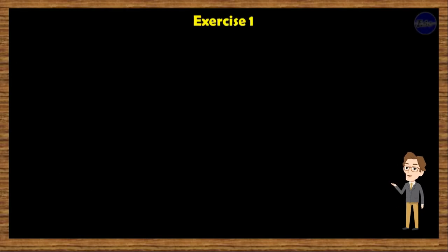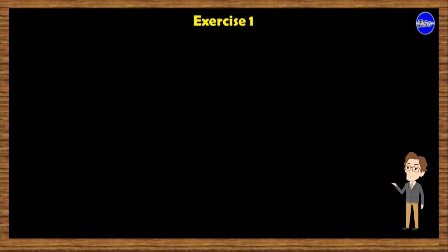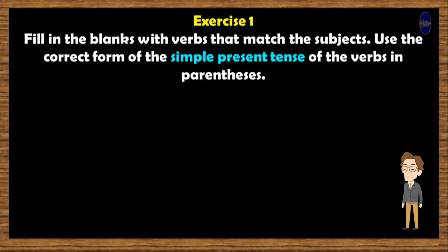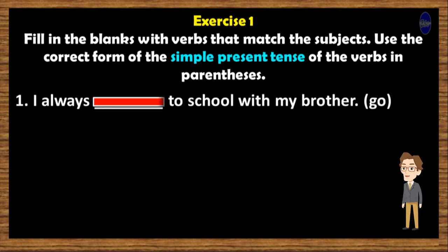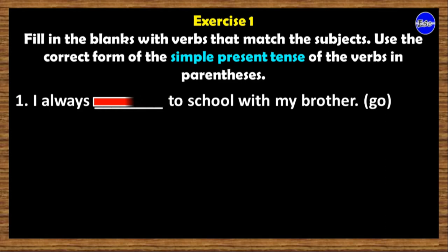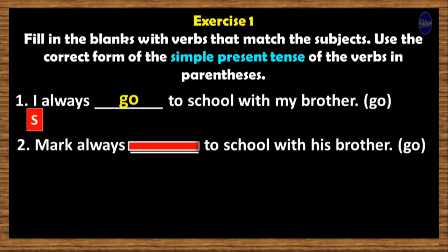What comes to your mind? Have you understood the lesson? Alright, let's try to answer these exercises. Answer the questions first, then the correct answer will automatically appear after 15 seconds. Exercise 1: Fill in the blanks with verbs that match the subjects. Use the correct form of the simple present tense of the verbs in parentheses. 1. I always ___ to school with my brother. (Go) 2. Mark always ___ to school with his brother. (Go)